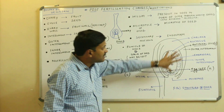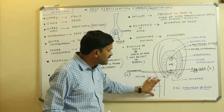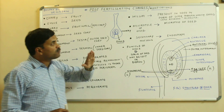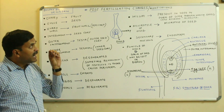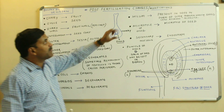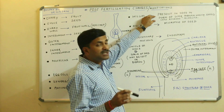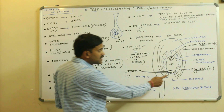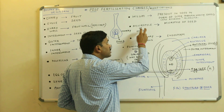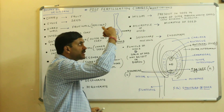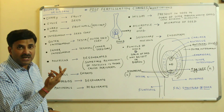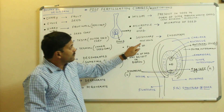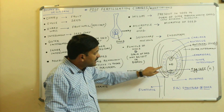The hilum is the point where the main body of the ovule is attached to the funicle, which is the stalk of the ovule. When the ovule is converted into the seed, the hilum is present in the seed in the form of a scar through which the seeds were attached to the fruit. The micropyle of the ovule also persists in the seed and is called the micropyle of the seed, through which the seed absorbs substances from the soil.